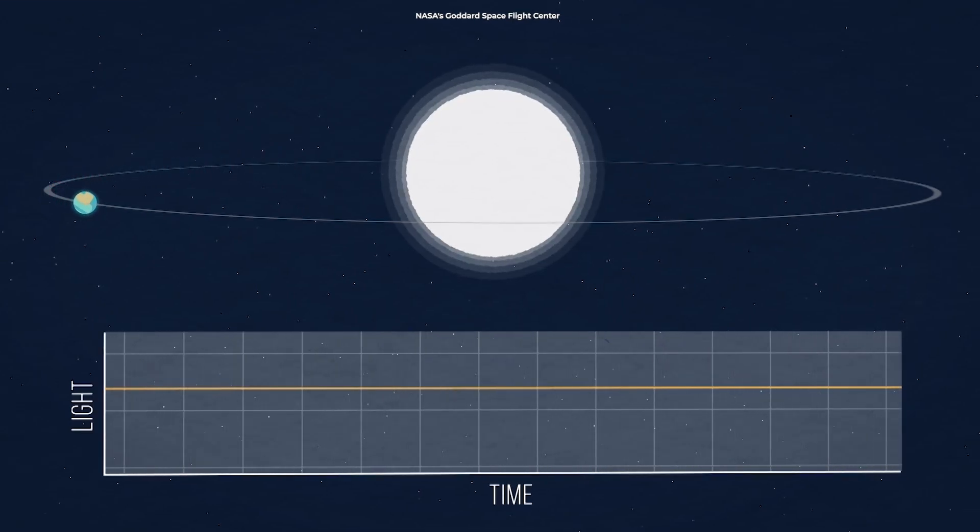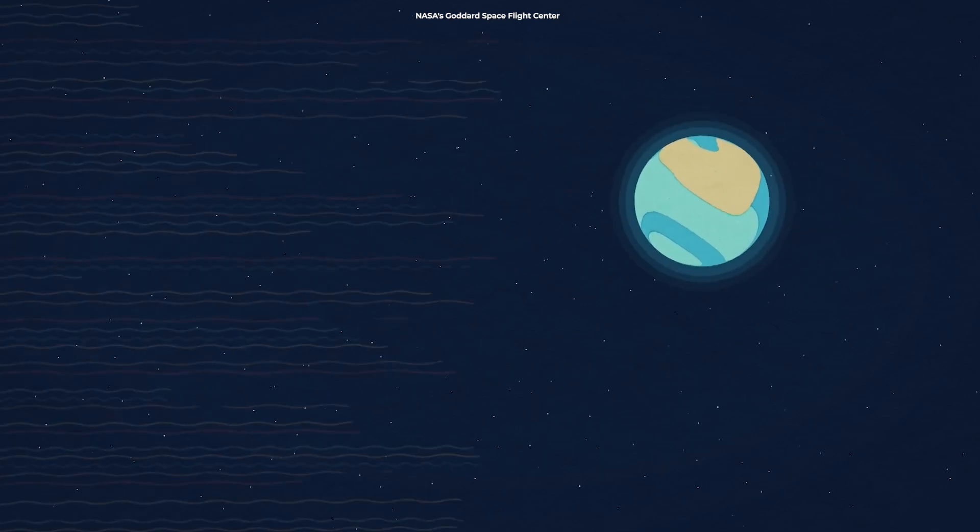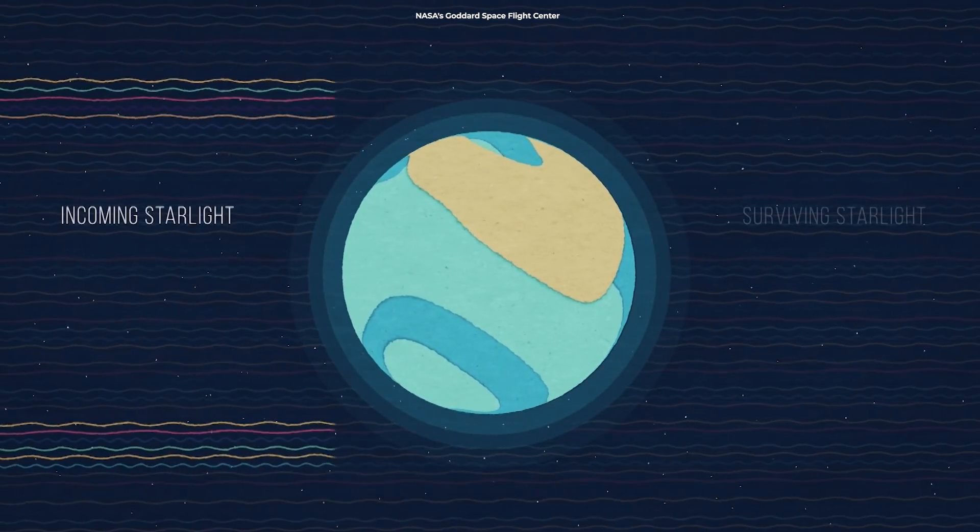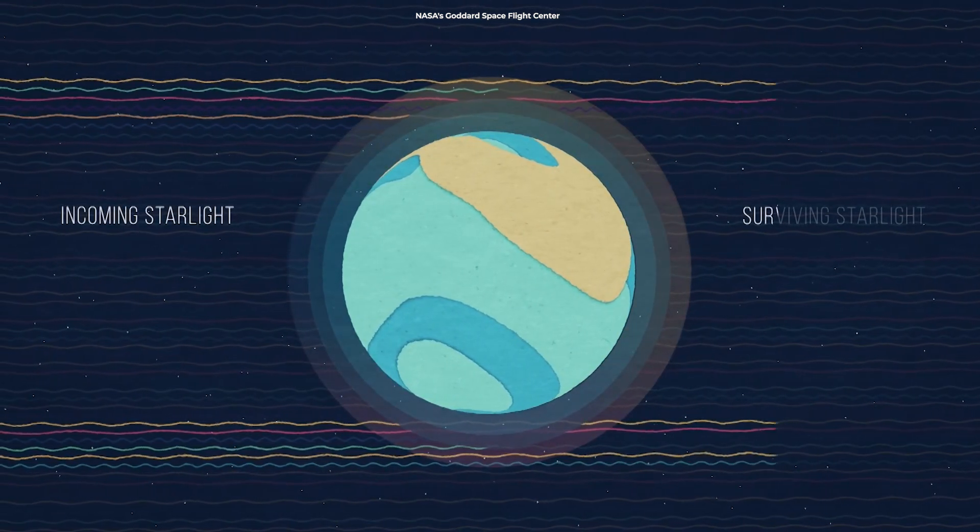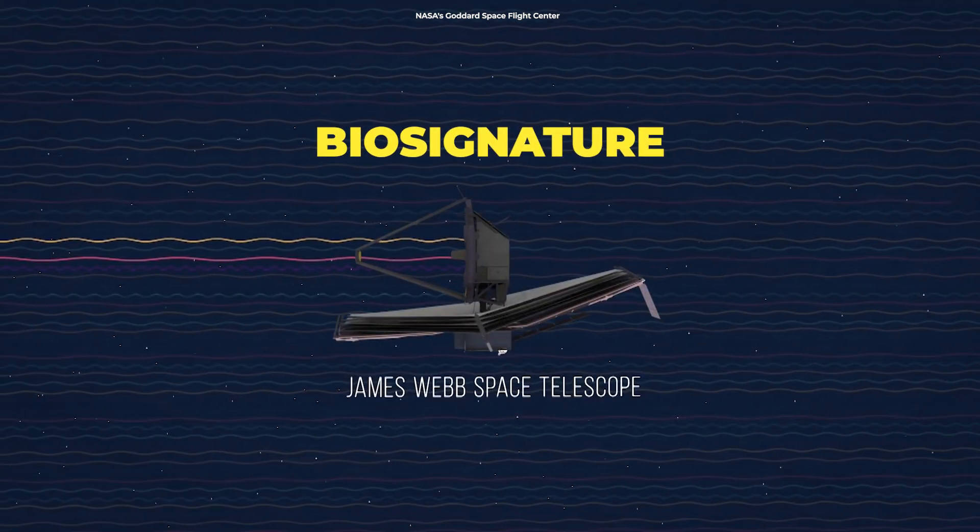To detect life on a distant planet, astrobiologists will study starlight that has interacted with the planet's surface or atmosphere. If the atmosphere or surface was transformed by life, the light may carry a clue, called a biosignature.